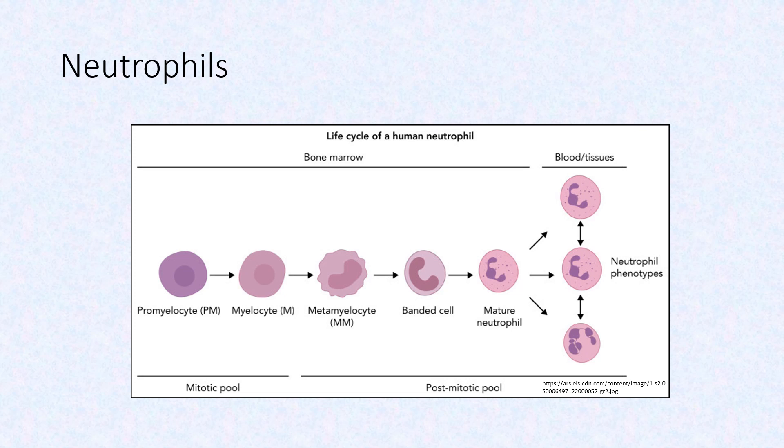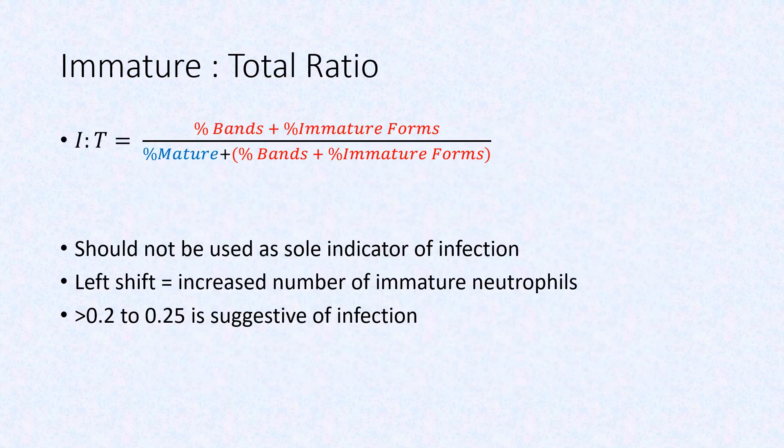The left shift is a useful tool for indicating an infection but should not be used as a sole indicator. The IT ratio is a calculation of the total number of immature neutrophils divided by the total number of neutrophils. An IT ratio greater than 0.2–0.25 is suggestive of infection or sepsis.